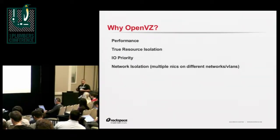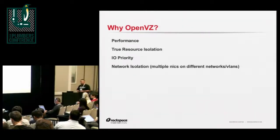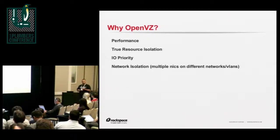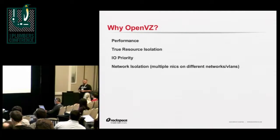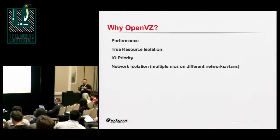The reasons, regarding containerizing — which of course everybody in here is obviously fans of — was that it gave us better performance. One of our requirements was that we needed to have true resource isolation and separation as much as possible within the container, and that we had to be able to set the disk access priority and guarantee disk access to each individual subscriber depending on their subscription level. We also had to have multiple network interfaces on multiple VLANs within our architecture and design.